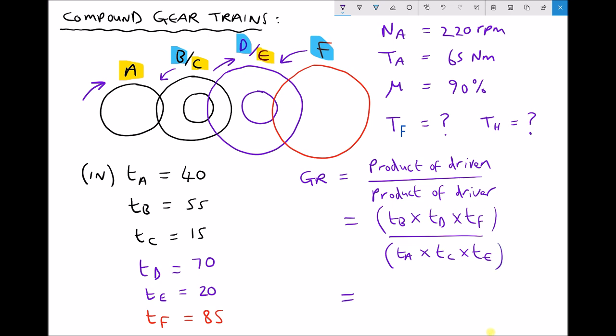Let's run some numbers and get our gear ratio. So driven: B, D and F, 55 times 70 times 85. Driver: A, C and E, 40, 15, and 20. Now when we run that through the calculator, we get a gear ratio of 27.3. So what we notice there is that we have a very high gear ratio in comparison to our simple gear train.